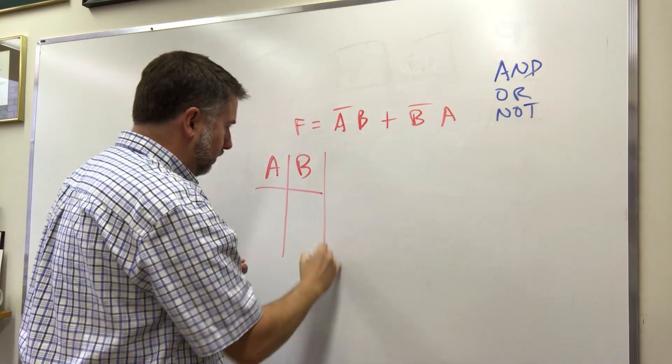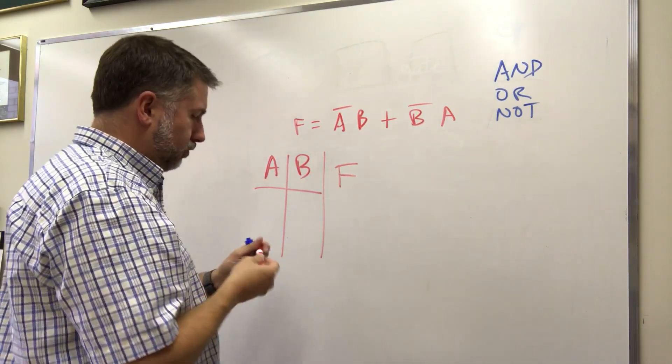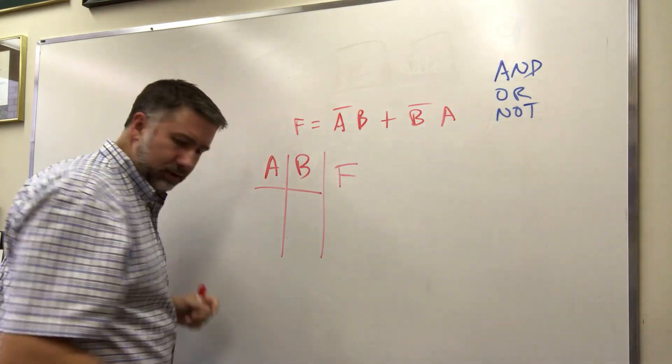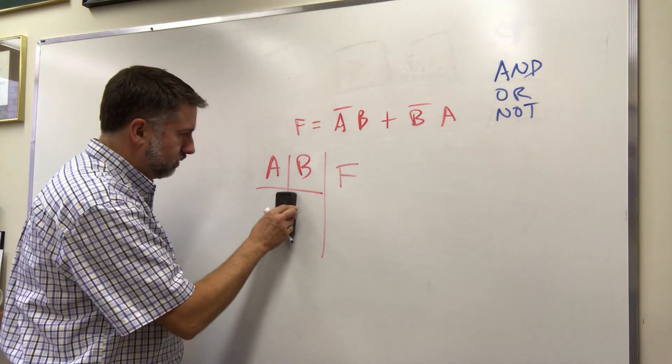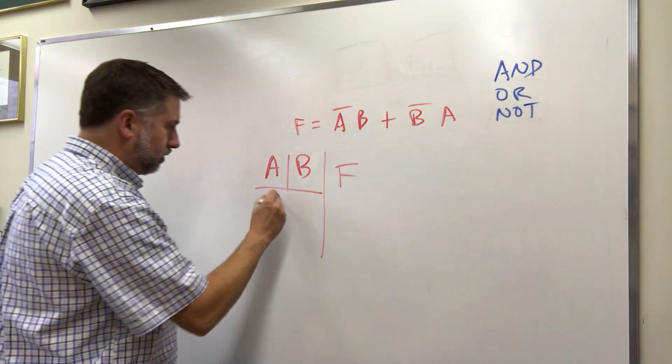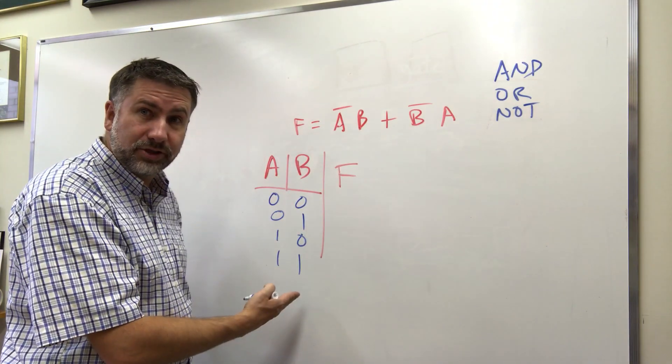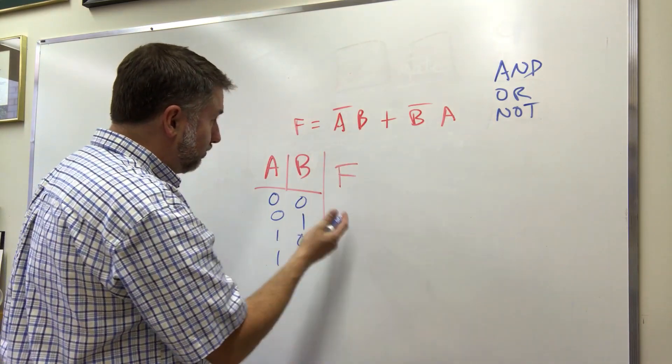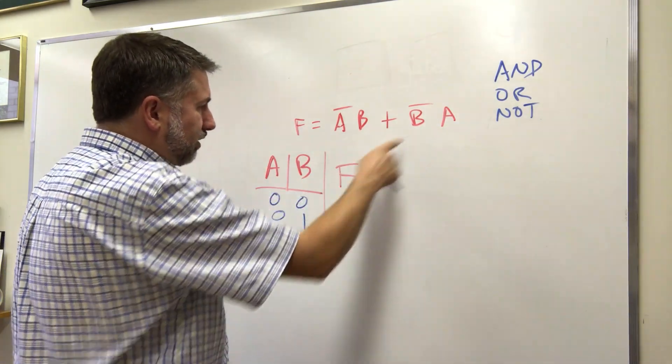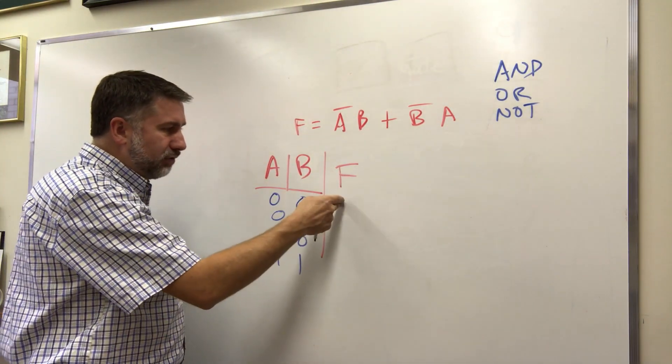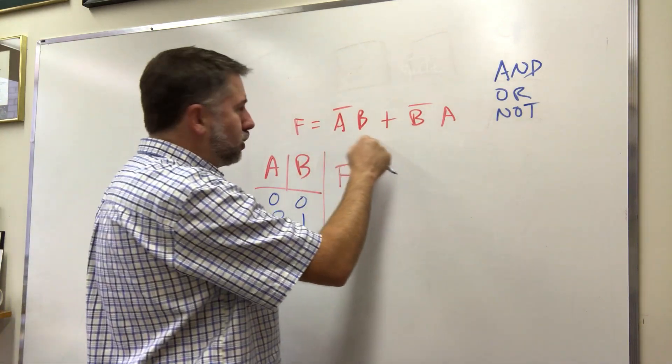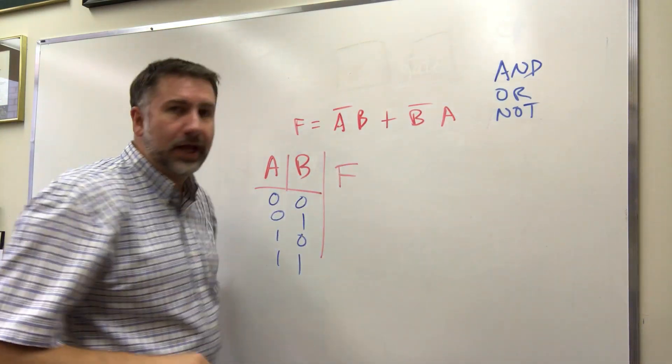If we look at the truth table for this function. Here's A and B and here's F. The truth tables are always going to be annotated using 0 0, 0 1, 1 0, 1 1. These are the four possibilities that you can get. So what we can do is we can figure out what the value of F will be for each possible combination of A and B.